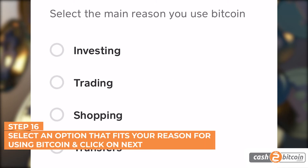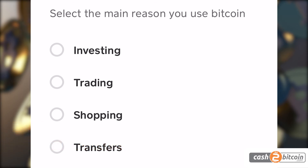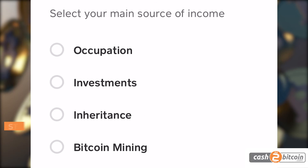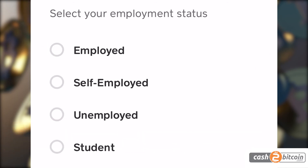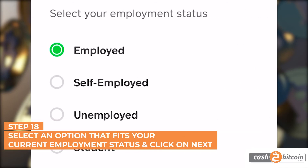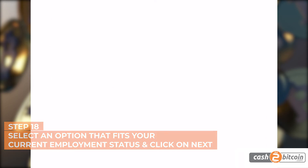Step 16. Cash App will now ask you a series of questions. Select an option that fits your reason for using Bitcoin and click on Next. Step 17. You will then be asked to select an option that fits your main source of income. Select your option and click on Next. Step 18. Select an option that fits your current employment status and click on Next.